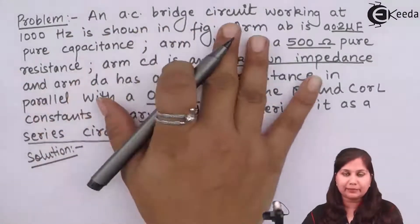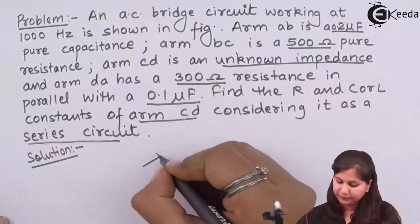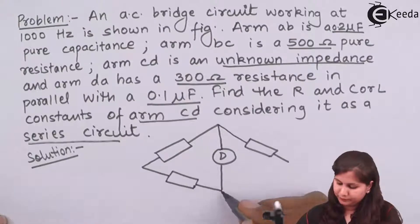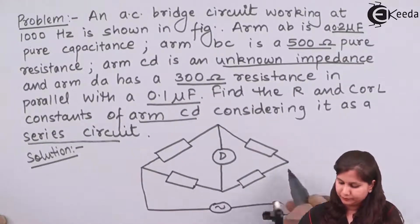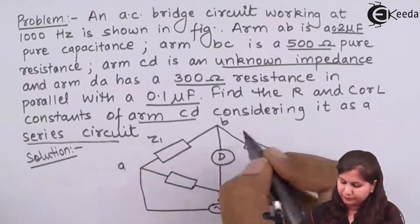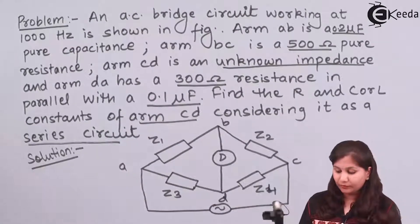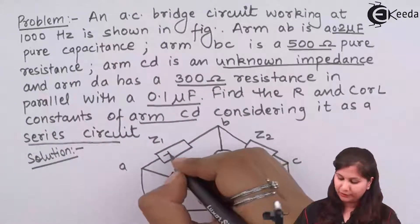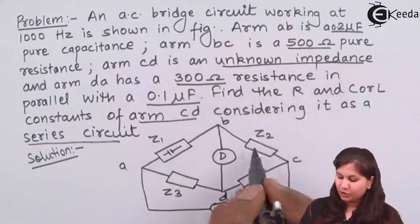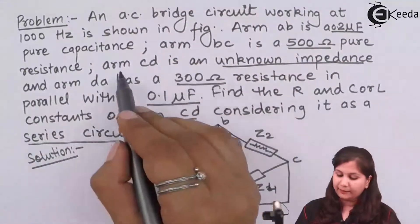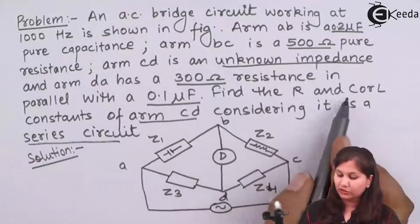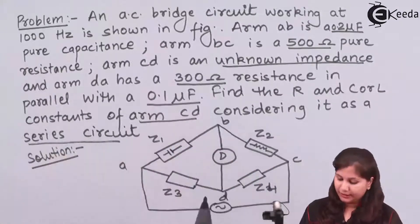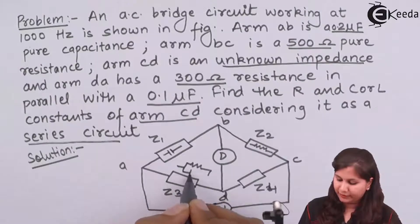Let's draw an AC bridge circuit. These are the four impedances. AB is a pure capacitance, BC is a pure resistance, CD is an unknown impedance which can be a resistance, capacitor, or inductor connected in series with R, and arm DA is a resistance connected in parallel with a capacitor.